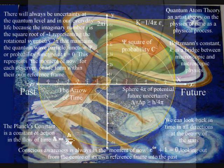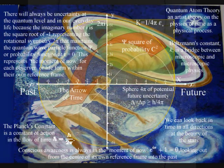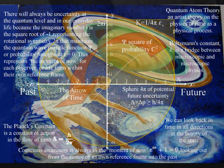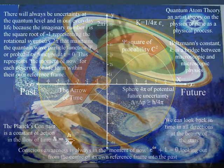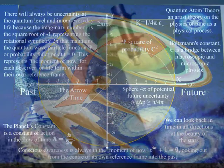Each individual observer is at the centre of their own reference frame, with their own timeline, or arrow of time, from the past into the future. This can be seen in the way that each individual observer can look back in time, in all directions, at the beauty of the stars.